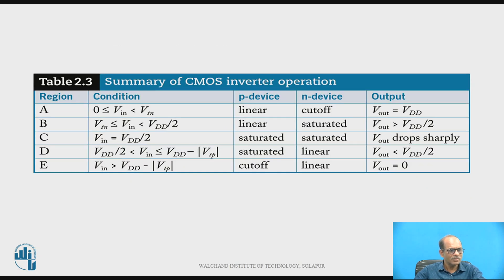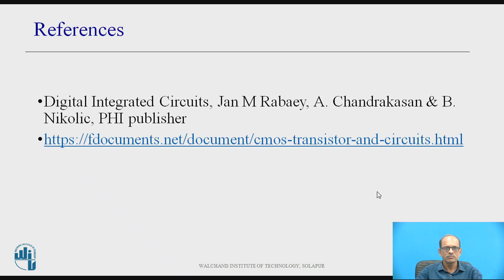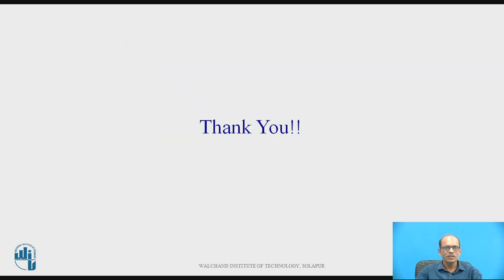This is a summary of the CMOS inverter operation, covering regions A to E with conditions, P device and N device status, and the output for each region. These are the references. Thank you for watching the video.